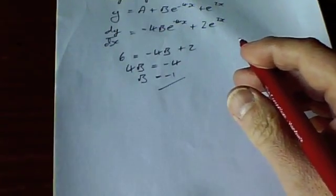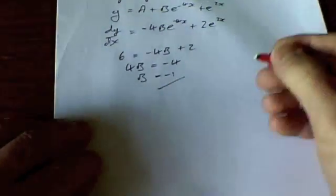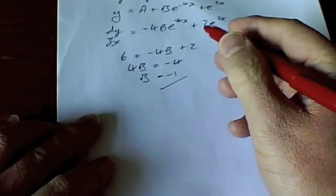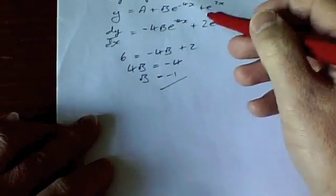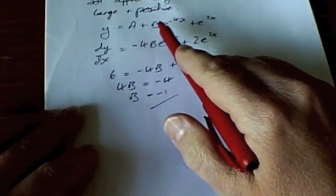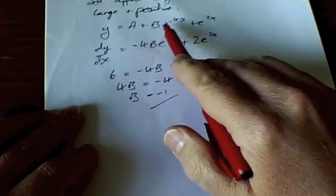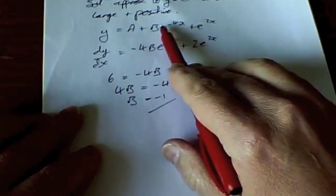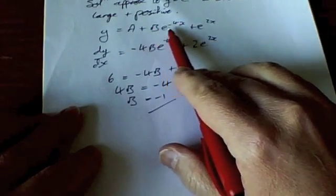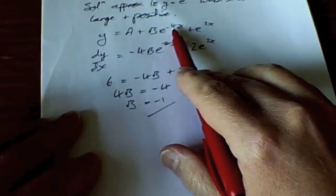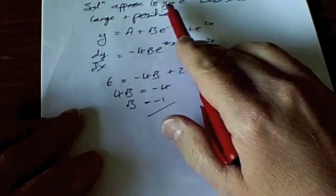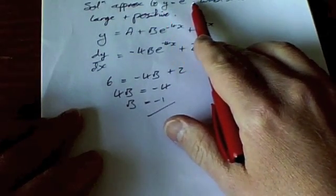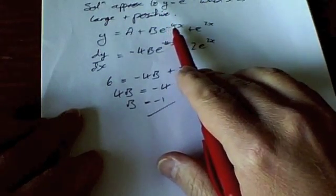Now if we have a quick look back at our solution here, when x tends to infinity we can see that this term here is going to tend to 0 and we were told that the whole solution approximated to y equals e^(2x) when x tends to infinity.